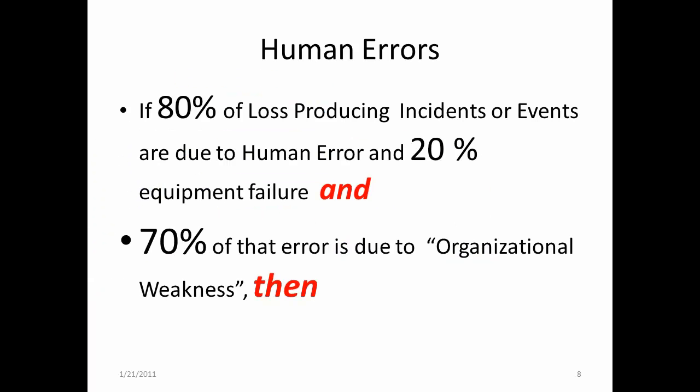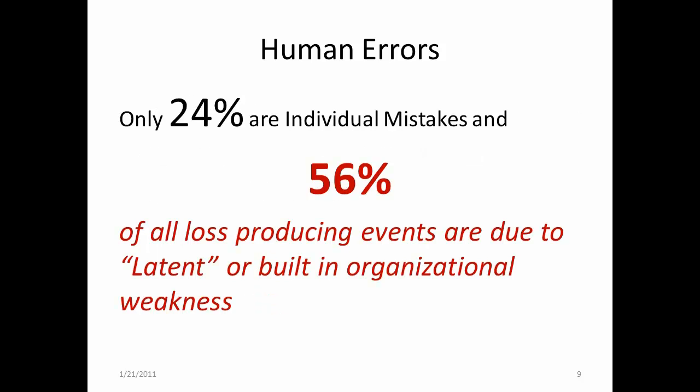Now what does this infer? If 80% of loss-producing incidents or events are due to human error and 20% are due to equipment failure, then we can take the next step and further see that 70% of that 80% is due to organizational weakness. From this we see only 24% of loss-producing incidents are due to the individual's mistakes, and 56% of all loss-producing events are due to latent built-in errors from organizational weakness. Over one half of human error is not from the errors made by the employee touching the equipment or performing the task — these were essentially designed directly into the job itself.